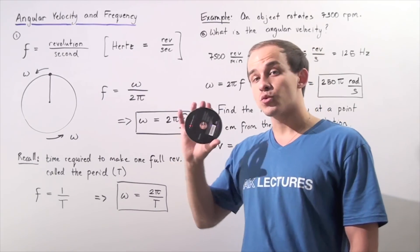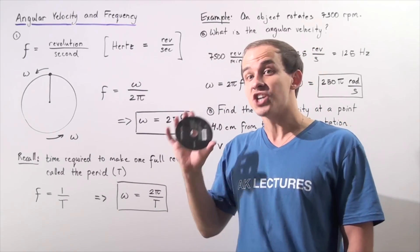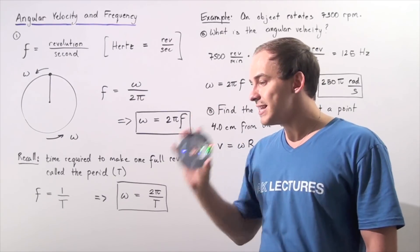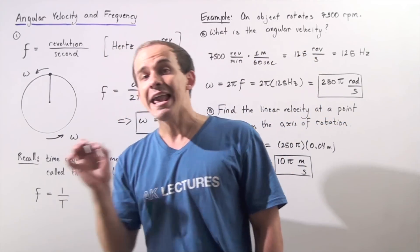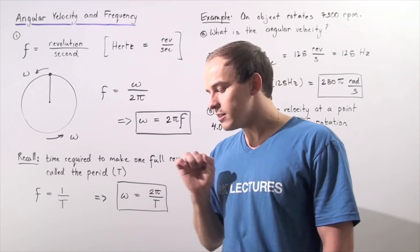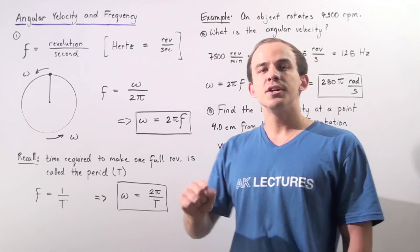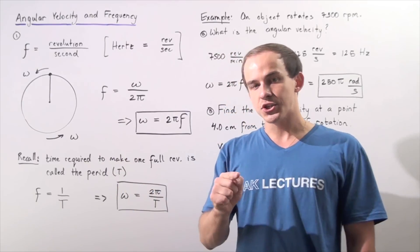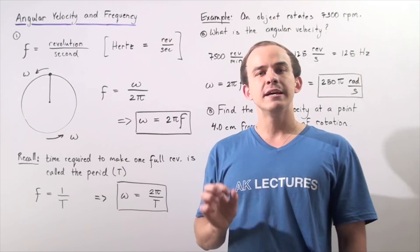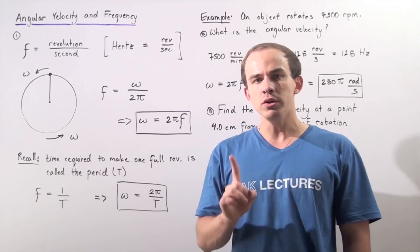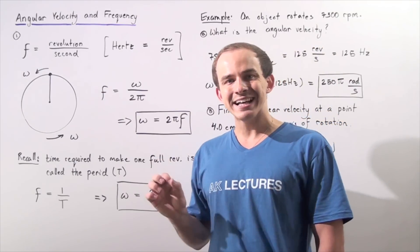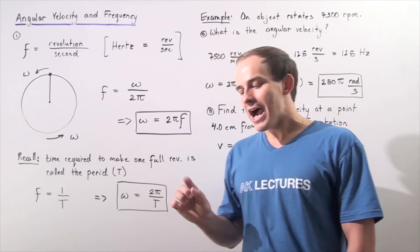Because the disc is rotating, it is undergoing angular rotation, and the disc is said to have angular velocity. Angular velocity is simply the number of radians that our object rotates per some given unit of time, so the units of angular velocity are radians per second.